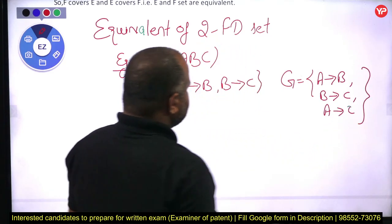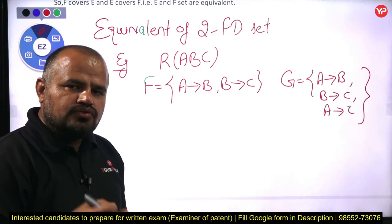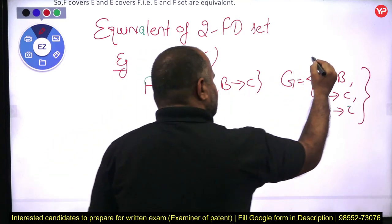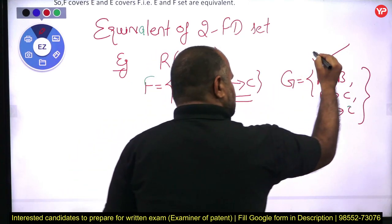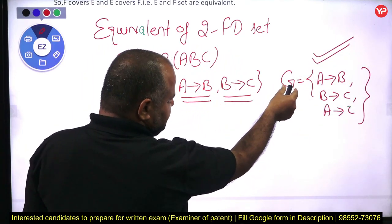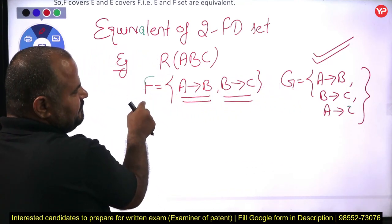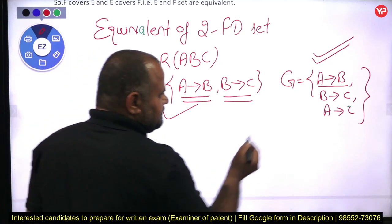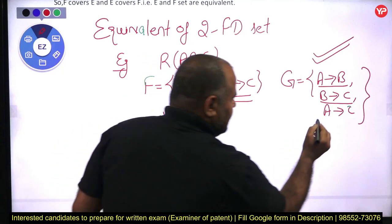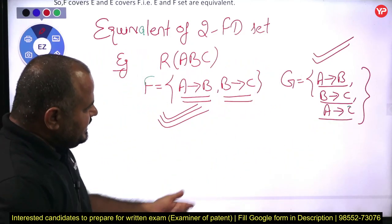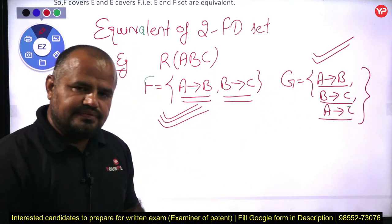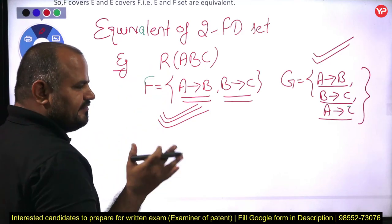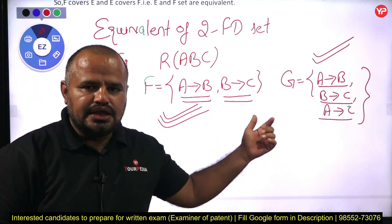My task is to check whether these two FD sets are equivalent or not. In simple terms, if every FD of F is a member of G and every FD of G is a member of F, then I can say F covers G and G covers F. If yes, then both FD sets are equivalent.